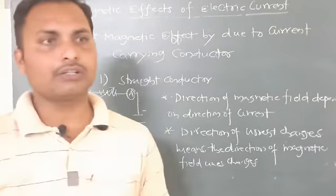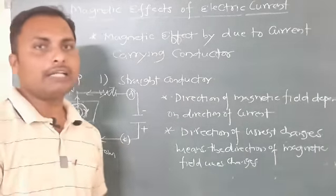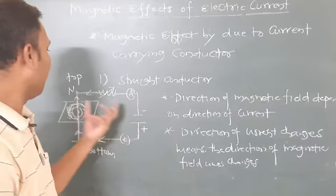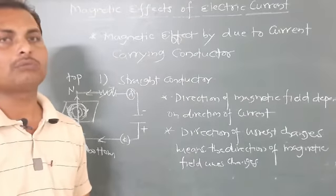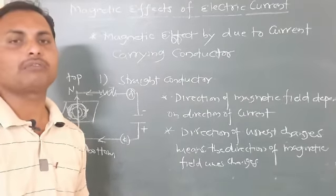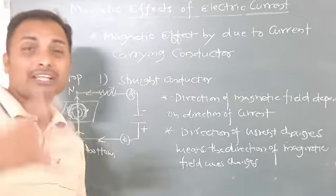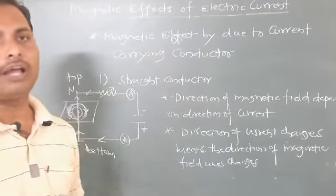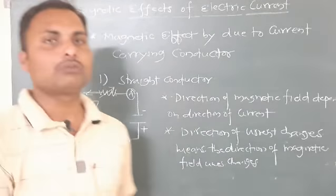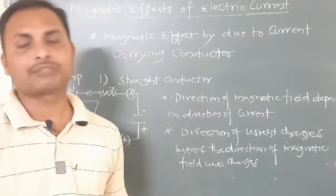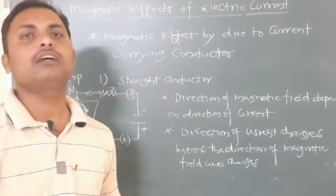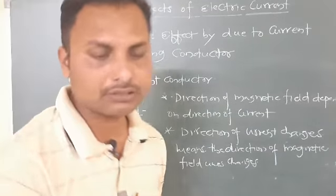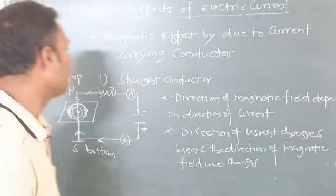These points are very important. Now, how can we find the direction of the magnetic field? There is one rule, and that rule is nothing but Maxwell's right hand thumb rule.